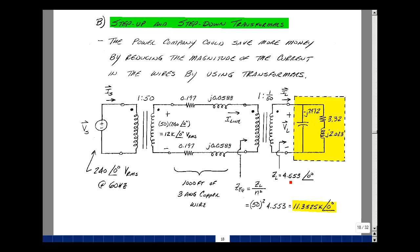But our load here is purely resistive at 60 hertz. Dividing that by 1 over 50 squared is multiplying that impedance by 50 squared. So it's going to take that 4.553 ohms and make it look like it's 11,382.5 ohms. Let's now analyze our system under these conditions.